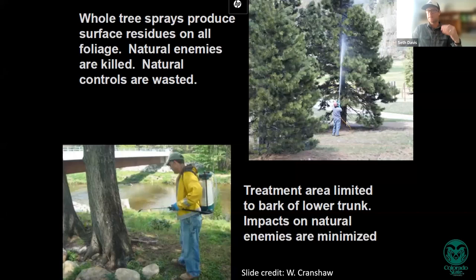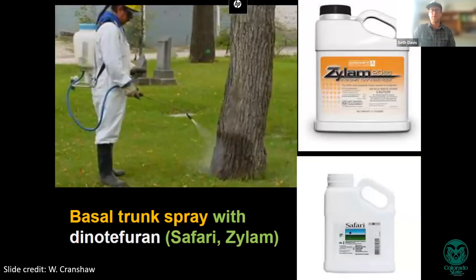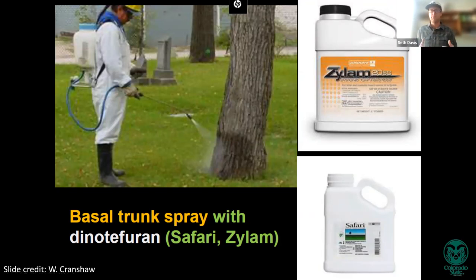Whole-tree sprays are generally not recommended because they produce surface residues that can end up in the soil as leaves or foliage are lost — even conifers lose third- and fifth-year needles. This also often results in the destruction of natural enemies and high off-target effects. Whenever possible, treatment should be limited to the lower trunk or bark area to minimize impacts on natural enemies. Utilizing natural controls, cultural controls, and intensive monitoring ahead of the need for chemical applications will help you maintain a more sustainable management system.